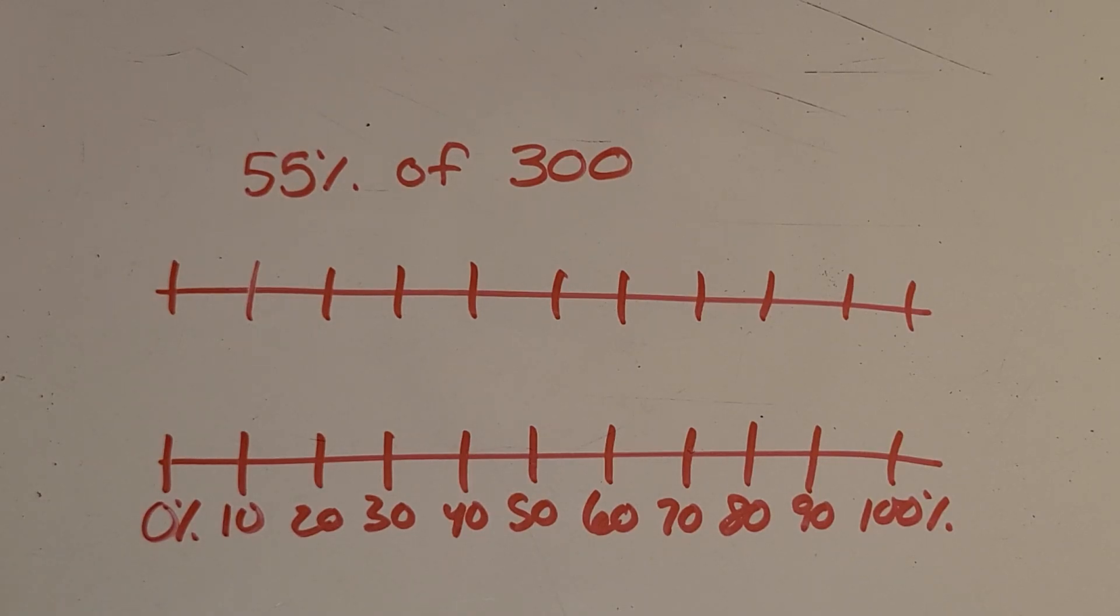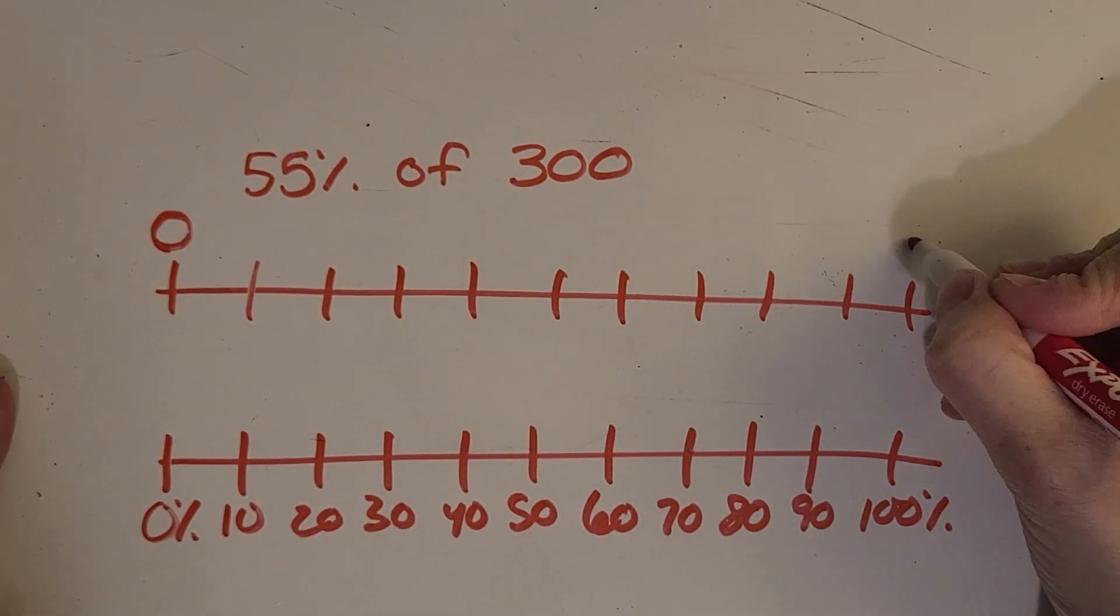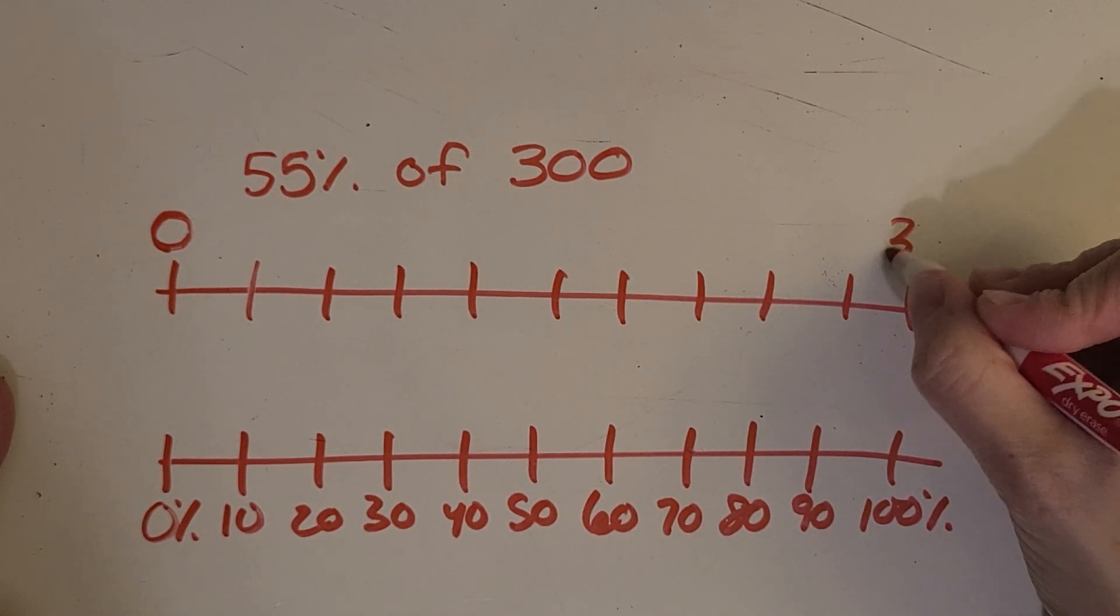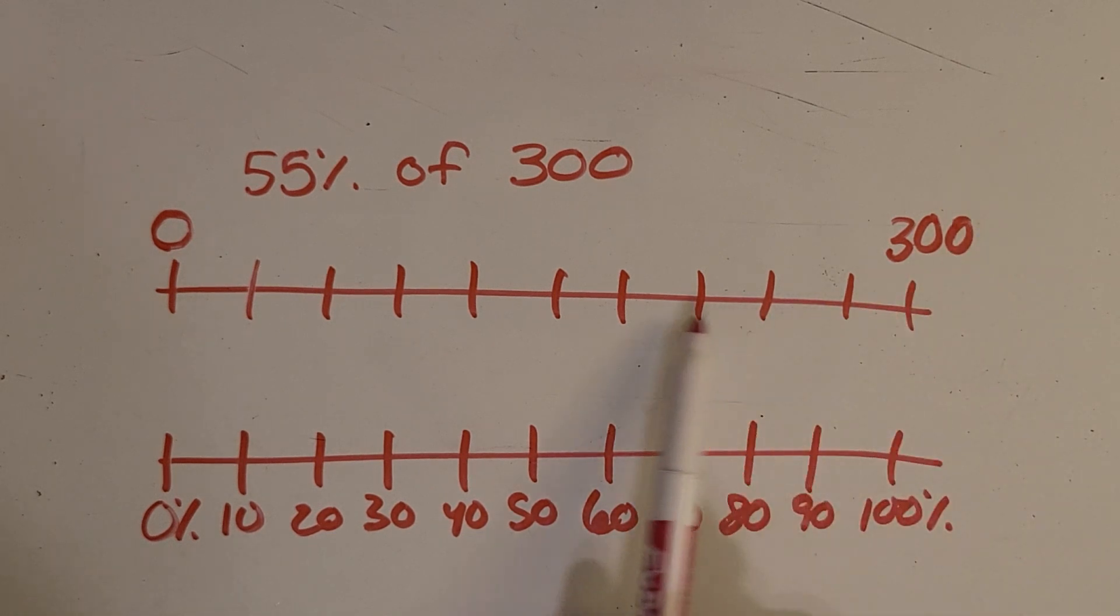All right, now I'm going to do another double number line example. And this time we're trying to find 55 percent of 300. As you can see I went ahead and broke up the bottom number line into the ten parts. That way we'll be able to take a look at what matches those 80 percent, 40 percent. And then the top number line I'm going to say this is zero down here, and the complete 100 percent of that would be all 300. Now we just have to ask ourselves if we're trying to break this up into 10 pieces what would that be? What would we be counting by?